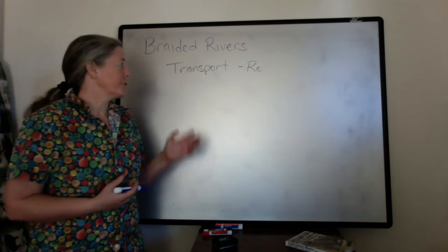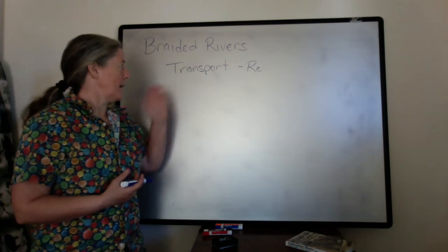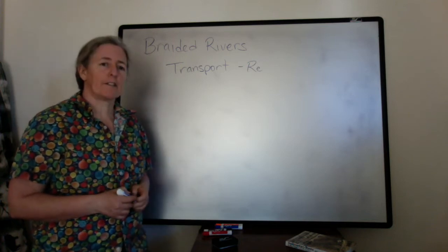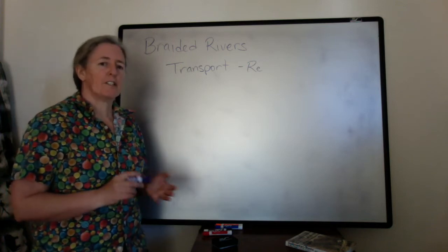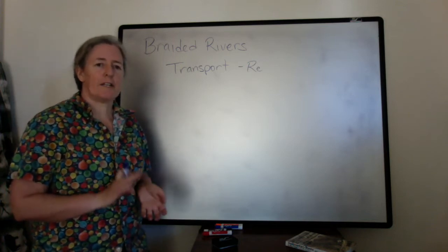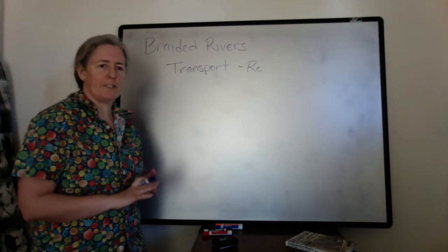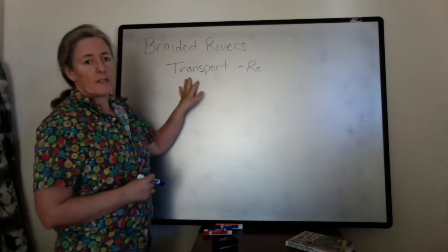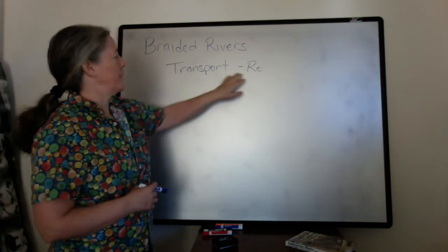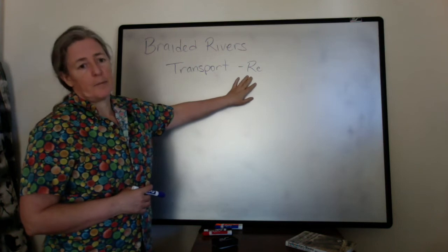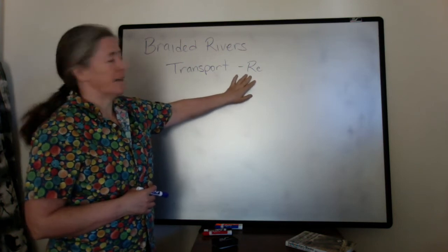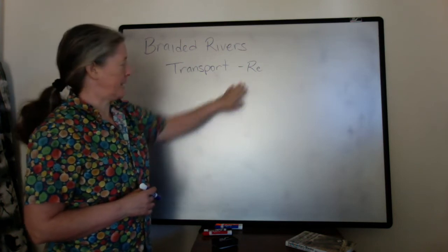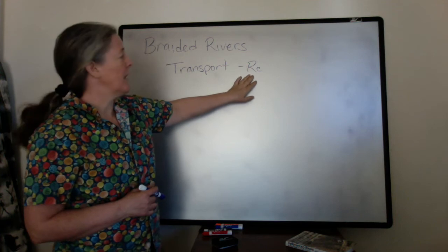Braided rivers have some very distinctive characteristics in terms of sediment transport, sedimentary structures, and facies. With all sediment transport, the Reynolds number is a really important aspect of it, including for braided rivers.